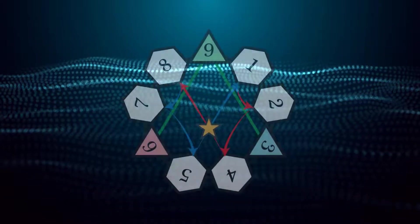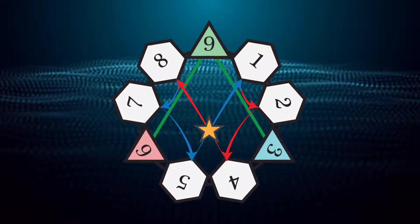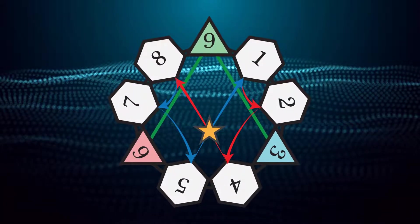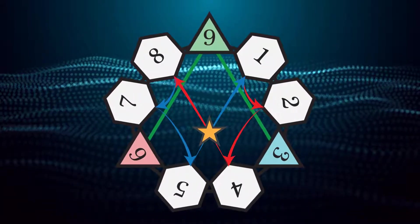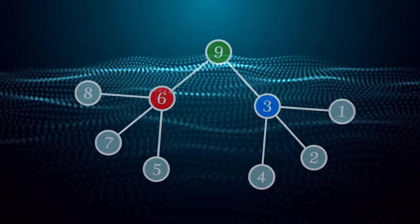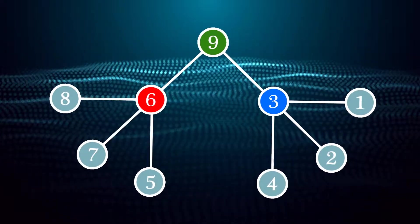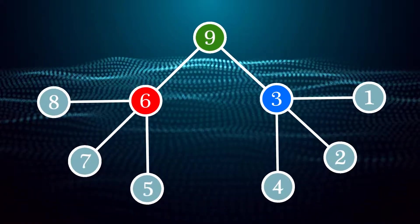All these other numbers here—one and eight, two and seven, four and five—are kind of like numbers that appear because of the three and the six. So it's almost as if it's starting with the nine, then the nine splits into three and six, and then the rest of the numbers come out from that split.